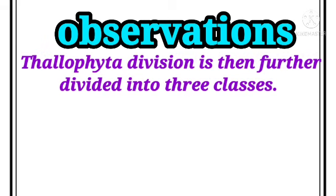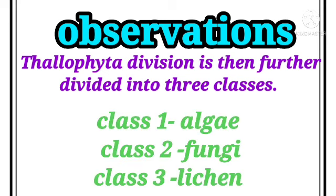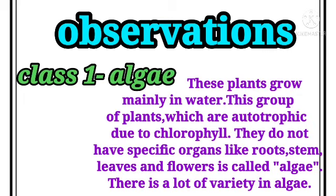Thallophyta division is further divided into three classes: Class 1 — Algae, Class 2 — Fungi, Class 3 — Lichens. Class 1 — Algae: these plants grow mainly in water. This group of plants is autotrophic due to chlorophyll. They do not have specific organs like roots, stem, leaves, and flowers. There is a lot of variety in algae.